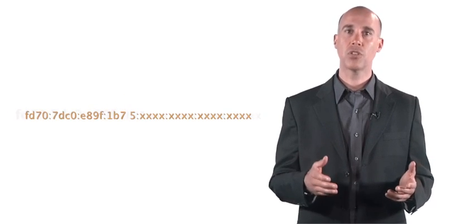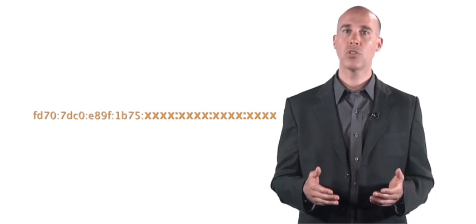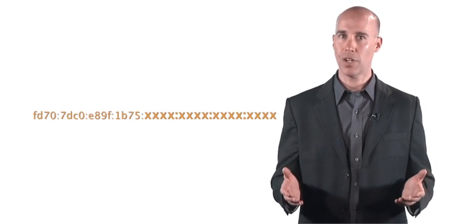Generally, the first 48 bits are the network prefix. The next 16 are the subnet ID, and the last 64 are the interface identifier, also known as the device identifier.